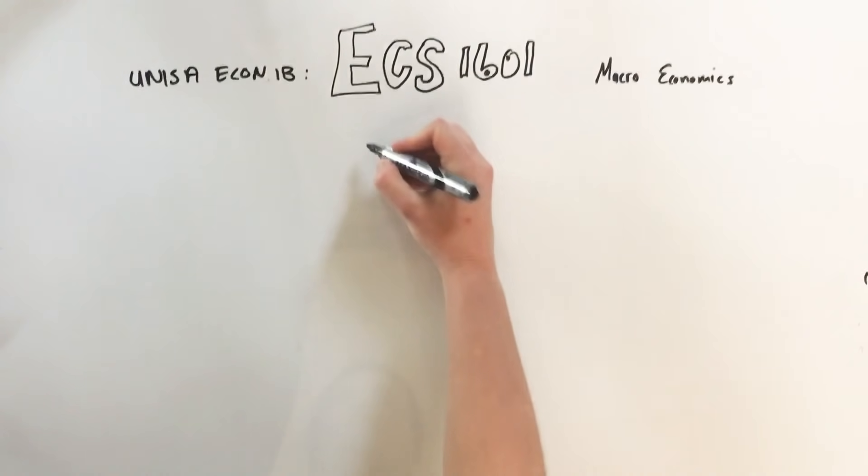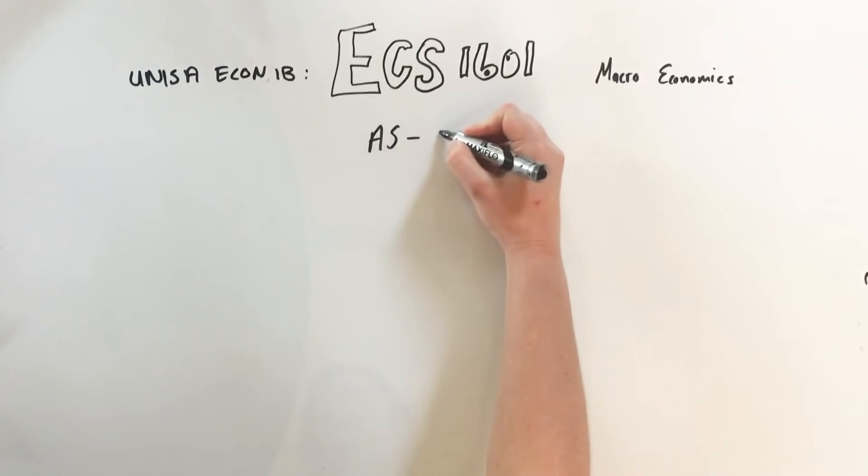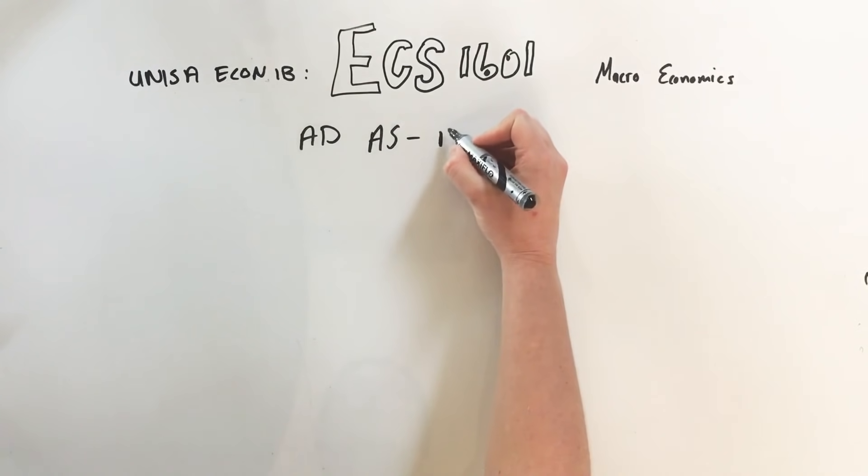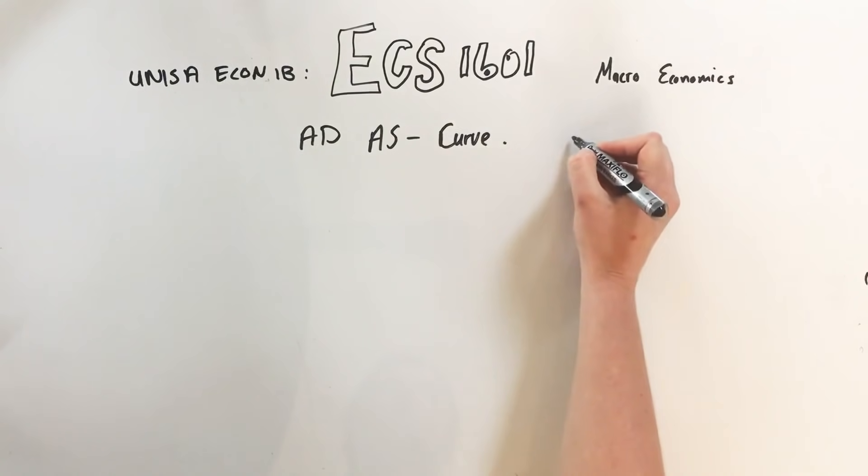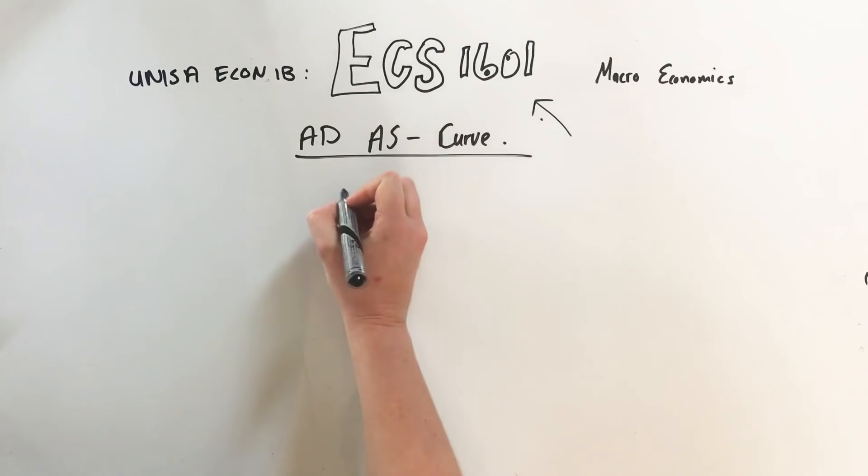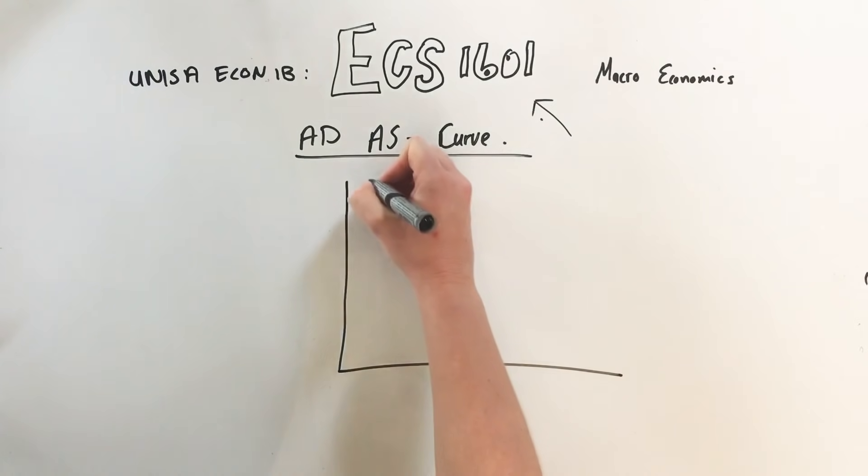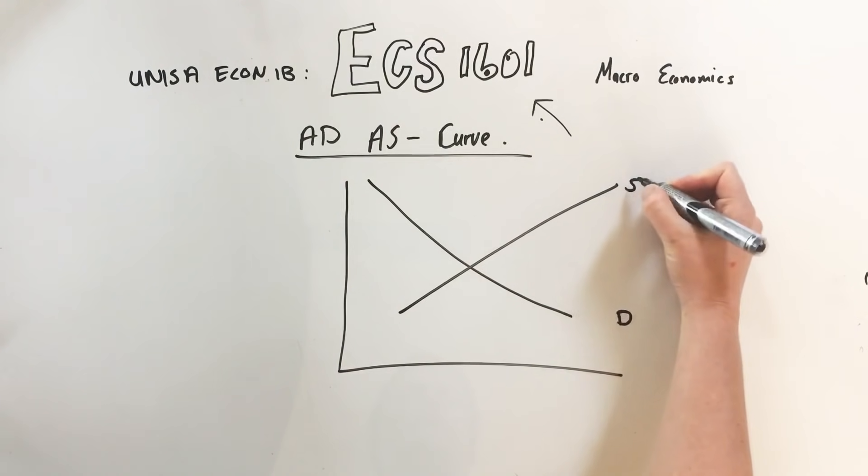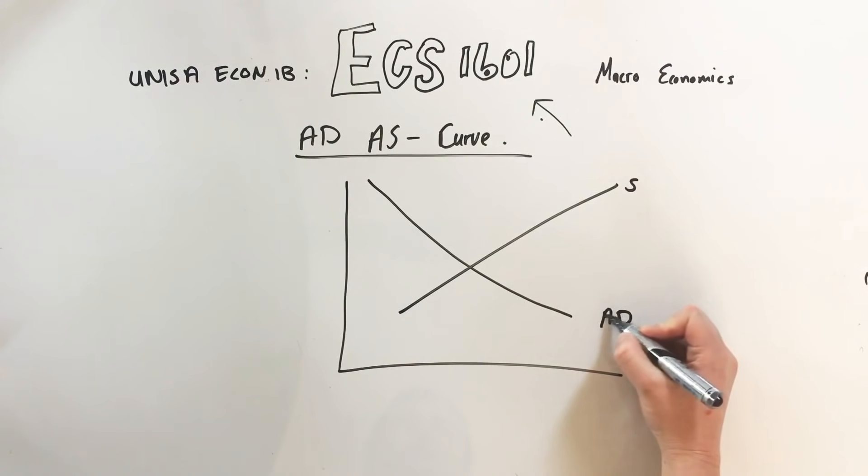Hello guys, now we're going to do the AD-AS, the aggregate demand aggregate supply curve, and this is all for the economics 1601 exam. The AD-AS curve looks just like microeconomics where you have demand running this way and supply running this way, except over here it's aggregate demand and aggregate supply. We're not looking at just one player in the economy but the economy as a whole.